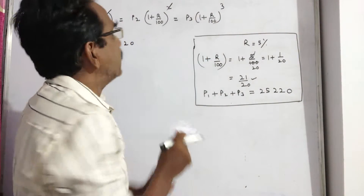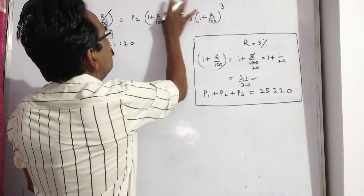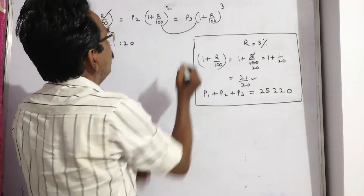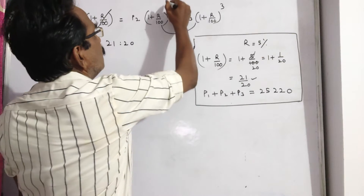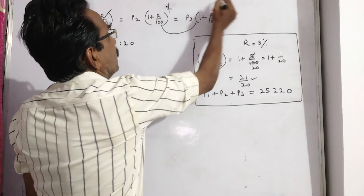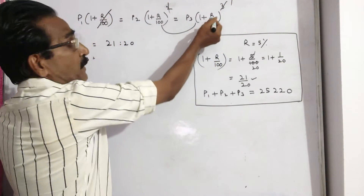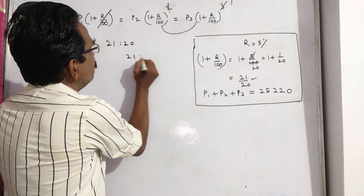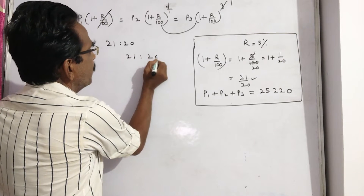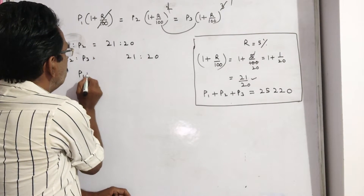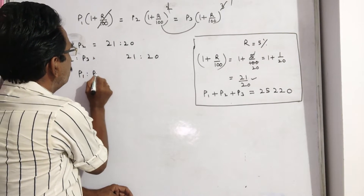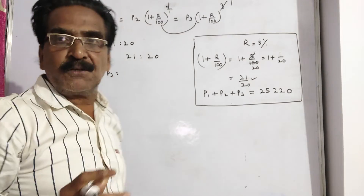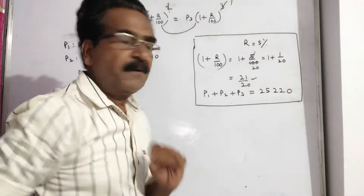Let us find P2 is to P3. These two are equal, so P2 is to P3 is equal to 1 plus R by 100, again 21 is to 20. Now P1 is to P2 is to P3.